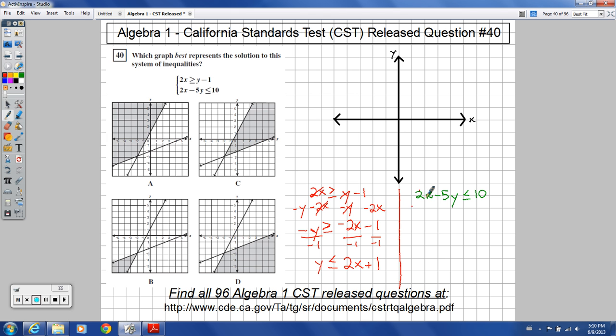So now I can graph that one. I'll do that momentarily. But let me get this one into slope intercept form as well. So I'll subtract 2x from both sides here.